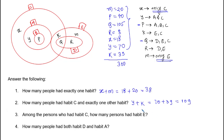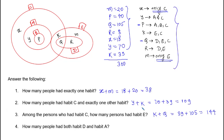Question 3: among the persons who had habit C, how many had habit E? The answer is k + q. The value of k is 39 and q is 105, so the answer is 144. Question 4: how many people had both habit D and habit A? From the Venn diagram, there are zero people having both habit D and habit A, so the answer is 0.